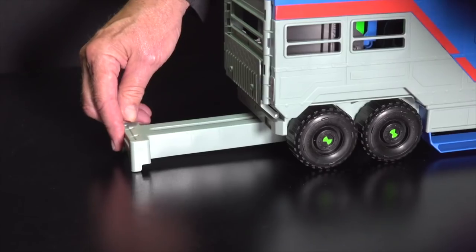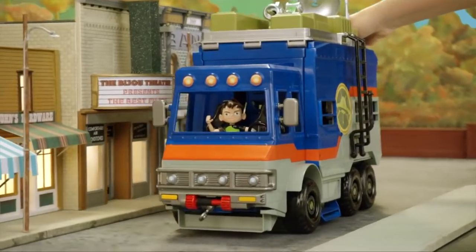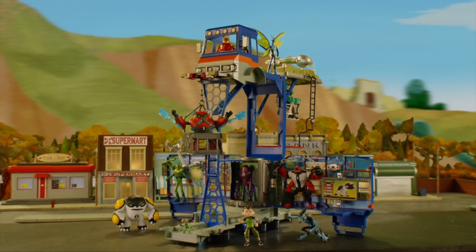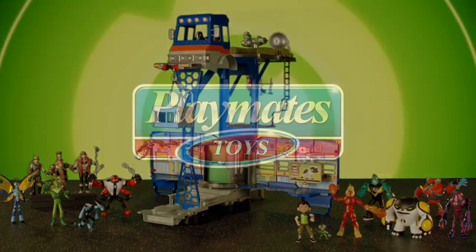Fold the wheels back into place. Don't forget the stabilizer. Now it's ready to roll. The Ben 10 Rust Bucket Transforming Alien Playset.